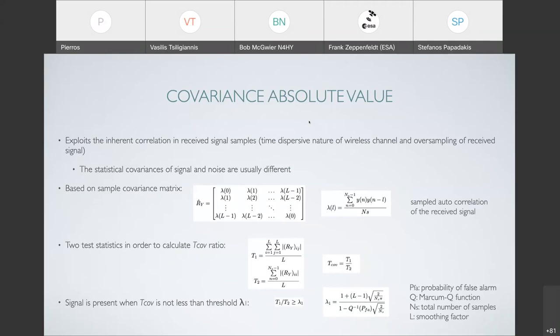Now a completely different technique is the covariance absolute value. This technique exploits the inherent correlation in the received signal samples. Because the wireless channel has its time dispersive and usually we use oversampling, we use a higher sampling rate than what is required to receive the signal. All this assists in getting some statistical covariances which are quite different than those of noise. So whenever there is a signal, whatever kind of signal, the covariances calculated are quite different than noise.